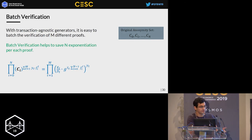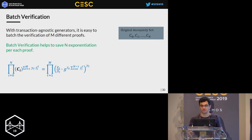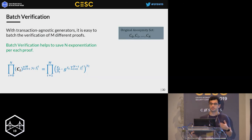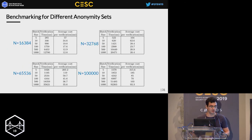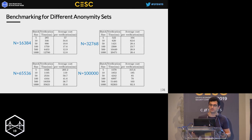With well-known batch verification techniques and simple math modifications, we can verify a batch of different transactions using just one big multi-exponentiation of size N, saving N exponentiations per each new spend. Based on our benchmarks, the average verification cost can be as low as 13 milliseconds for anonymity sets of size 16,000, and as low as 35 milliseconds for anonymity sets of 65,000.